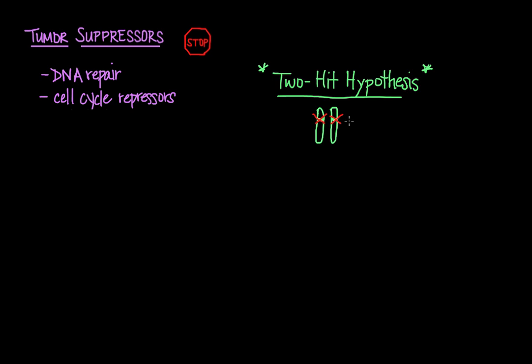The two-hit hypothesis was first proposed with cases of retinoblastoma, a rapidly developing cancer that originates from the immature cells of the retina, the light-detecting tissue of your eye. And I'll write this as PRB for retinoblastoma protein.